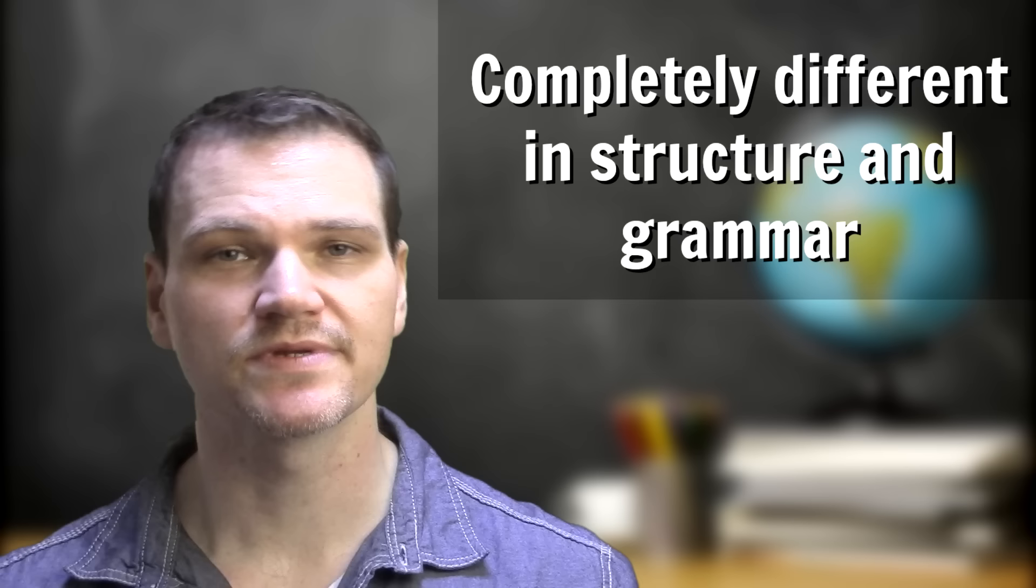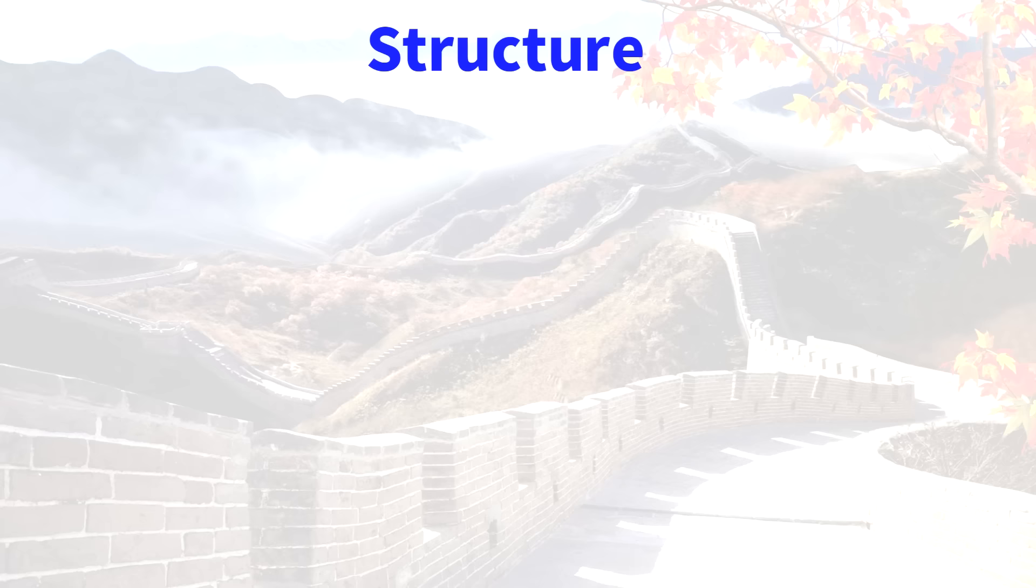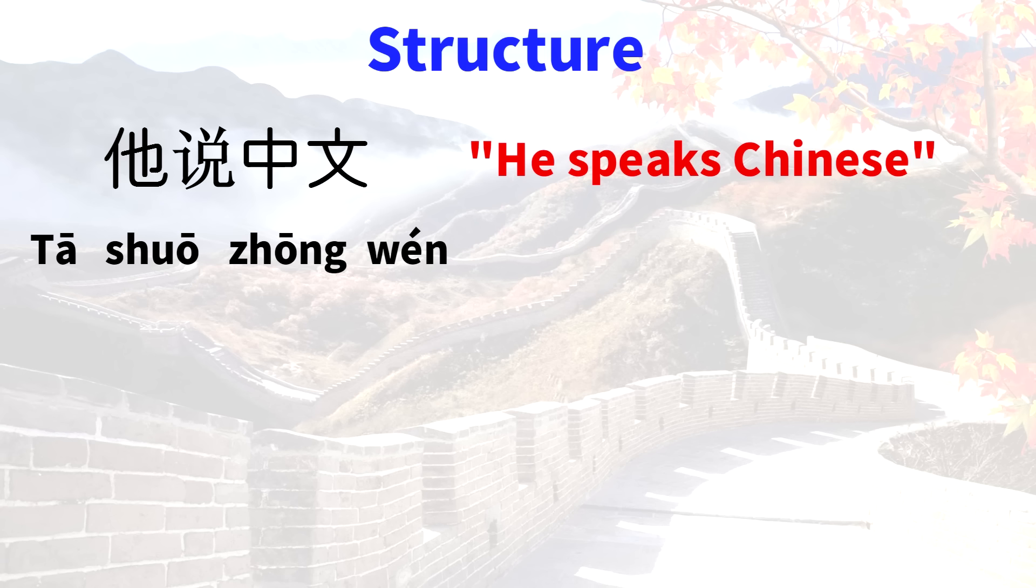Structure. The structure and grammar of the two languages is completely different. At the most basic level, Chinese is an SVO language while Japanese is an SOV language. Here's an example in Chinese: 他说中文. This means he speaks Chinese, and you can see SVO: Subject, Verb, Object.